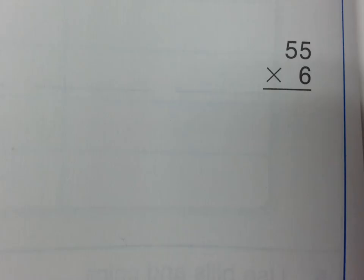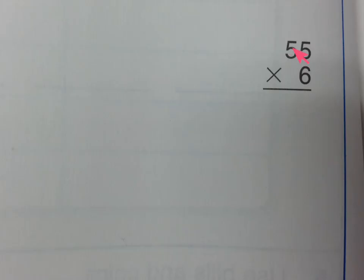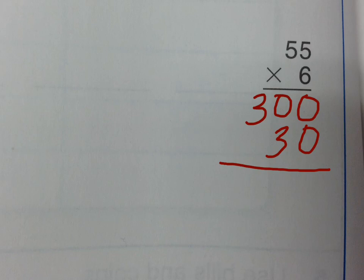Let's take a look at that. Here we've got 55 times 6. First, 6 times 50 gives us 300. Next, 6 times 5 gives us 30. Add those together for the final product.